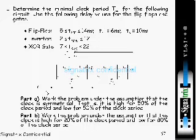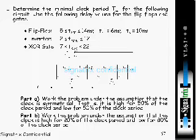For Part A, the clock period must be less than or equal to: flip-flop delay plus propagation delay produced by the combinational logic plus setup time of the destination flip-flop minus skew. This is the general formula for minimum clock period calculation.